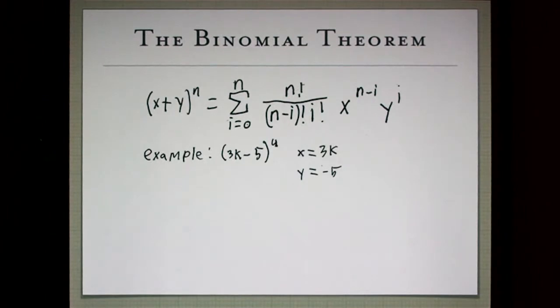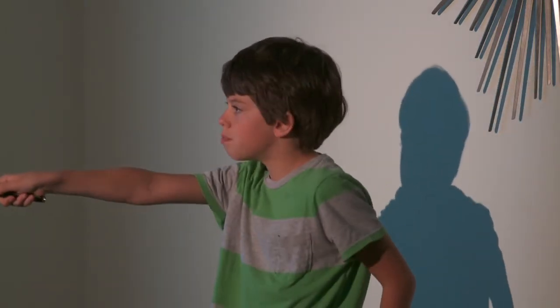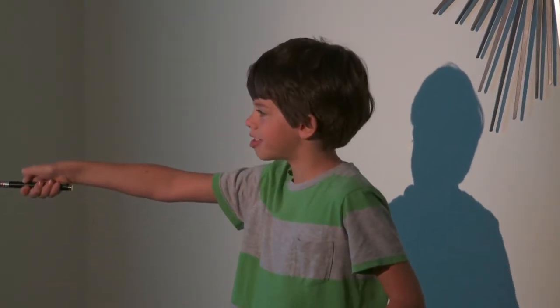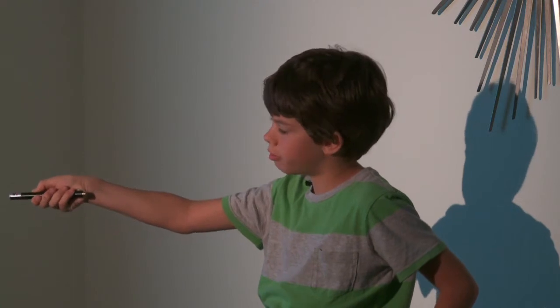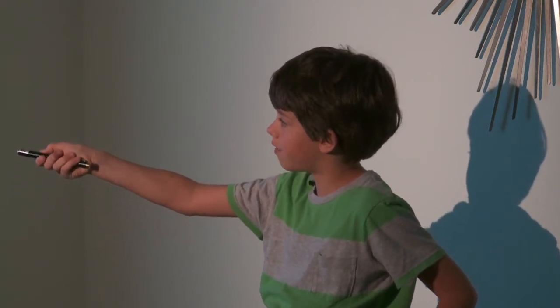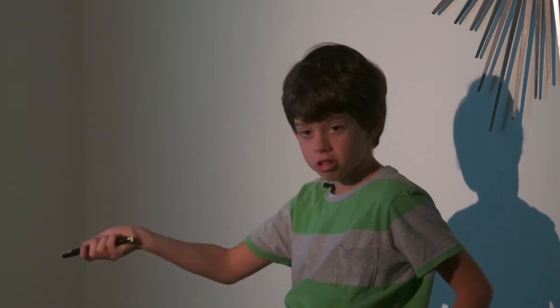And our example we're going to use is 3k minus 5 to the 4th, where our x is 3k and our y is negative 5. Now the book doesn't teach it this way. They teach it in one confusing blob of terms. We like to do a term at a time. And since it's i equals 0 to n, we know that the term number should always be 1 greater than the i. So if our i goes up to 4, we should have 5 terms.